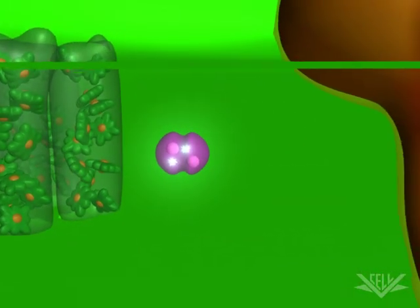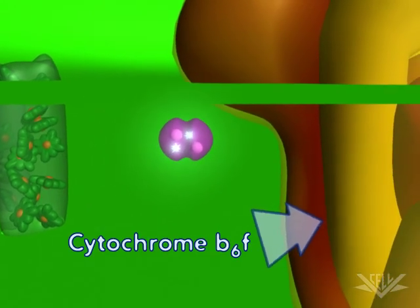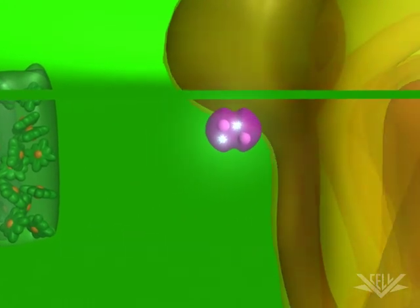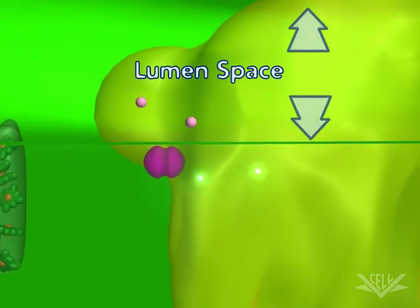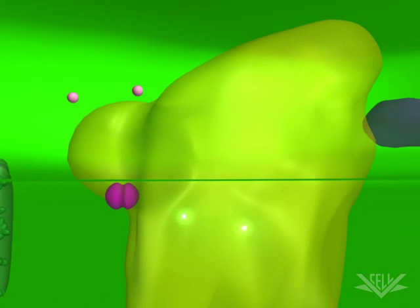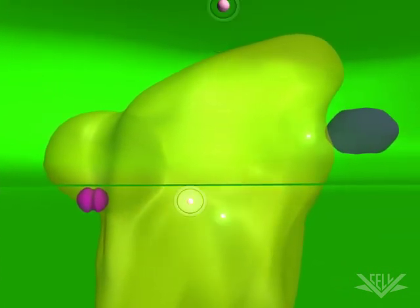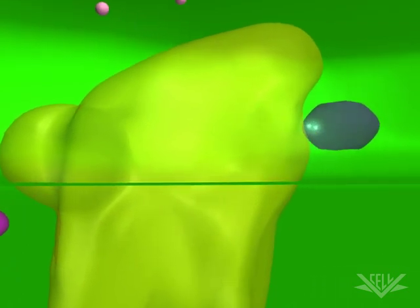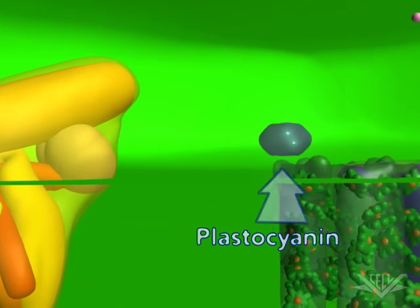Plastoquinone QB then transfers the two electrons to the cytochrome B6F complex. The two protons it picked up are released into the lumen. These transfers are coupled with the pumping of two more hydrogen ions into the lumen space by cytochrome B6F. The electrons are next transferred to plastocyanin, another mobile carrier.